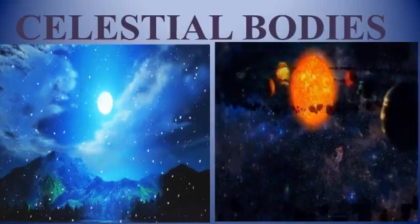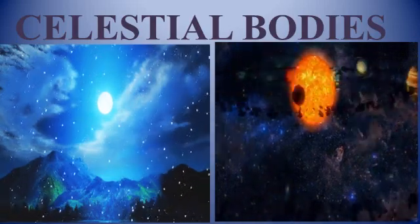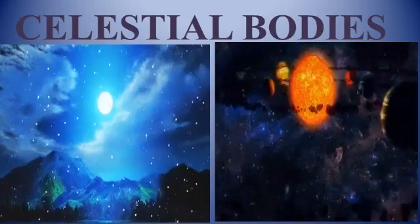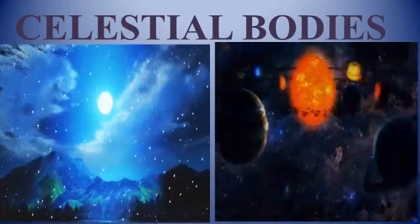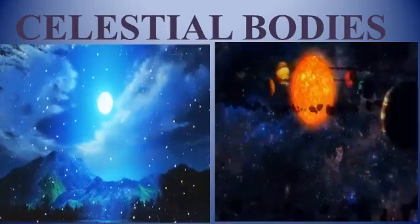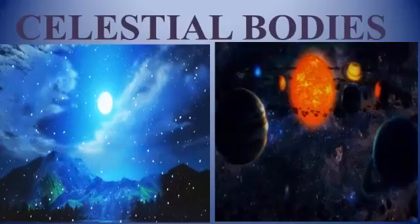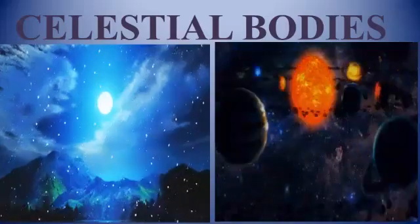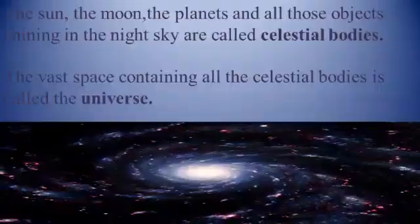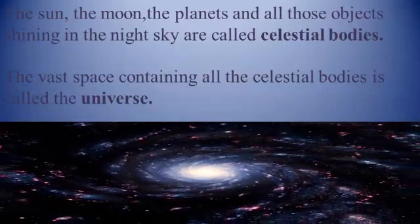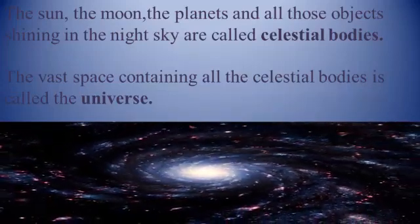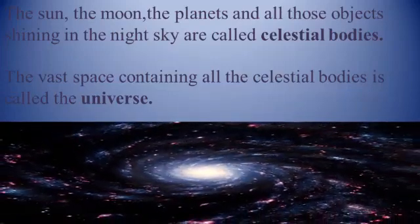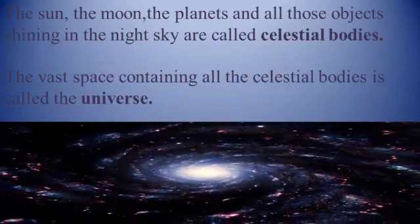When you look at the sky, what do you see? During the day you see the sun. During the night you see a more open space with the moon and numerous small points of light. Most of these appear to twinkle and we call them stars. All these objects in the sky are called celestial bodies, also known as heavenly bodies. The sun, the moon, the planets and all those objects shining in the night sky are called celestial bodies. The celestial bodies are spread over a very vast space, and this vast space containing all the celestial bodies is called the universe.